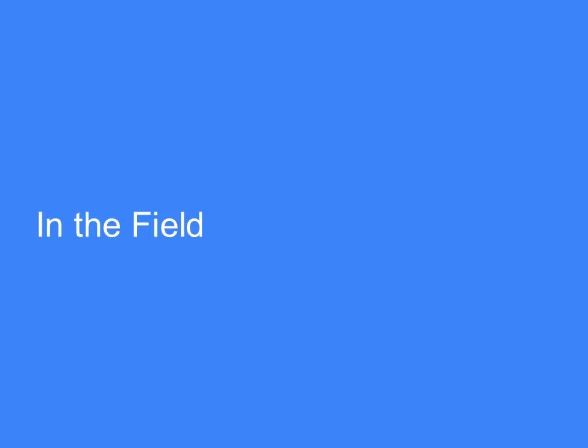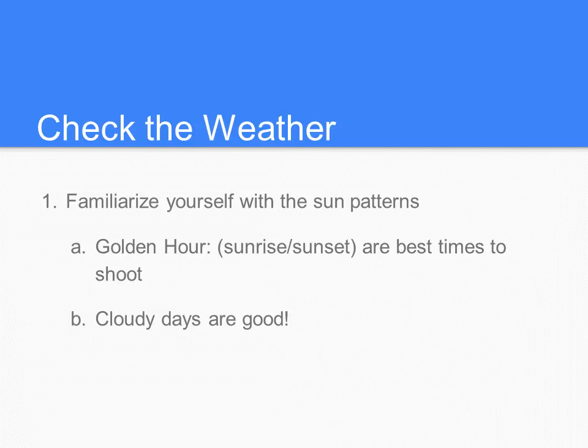Now that you are all researched and ready, it is time to talk about actually shooting. One thing I always do right before shooting is check the weather. Familiarize yourself with sun patterns — the sun rises in the east and sets in the west — so you can plan accordingly. This is helpful when shooting landscapes depending on how the sun will light the scene. I personally like shooting during golden hour, about an hour before the sun sets.